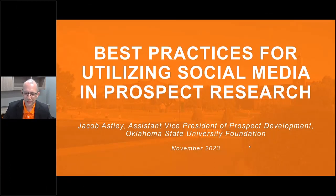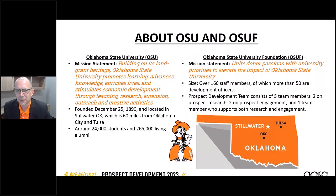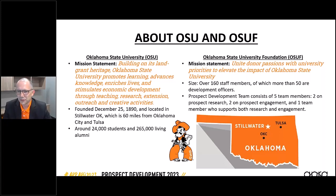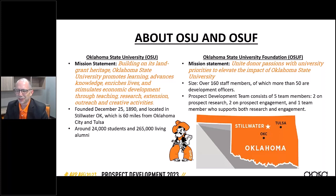I'm Jacob Astley. I'm at Oklahoma State University, located in Stillwater, Oklahoma — about an hour from Oklahoma City and an hour from Tulsa. It's a land-grant university founded on Christmas Day in 1890, with about 24,000 students and 265,000 living alumni. The Oklahoma State University Foundation exists to serve the philanthropic mission of OSU. There are about 160 staff members, of which more than 50 are development officers. The prospect development team consists of five members: two prospect researchers, two in prospect engagement, and one utility player who supports both sides.